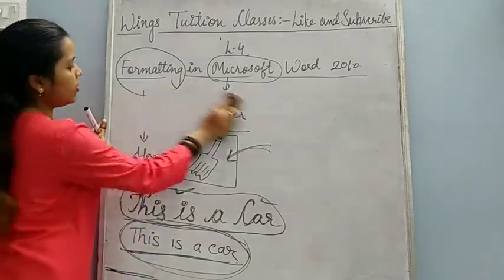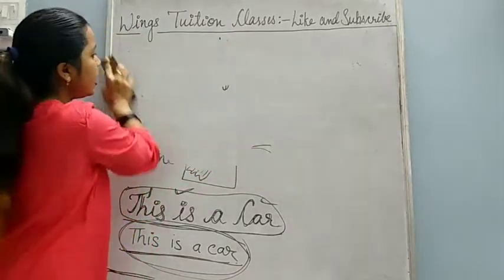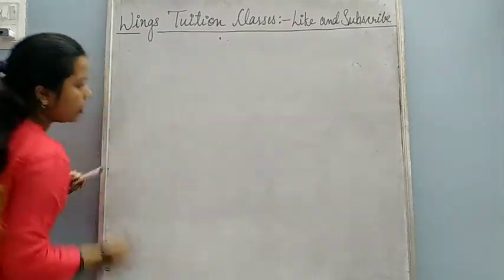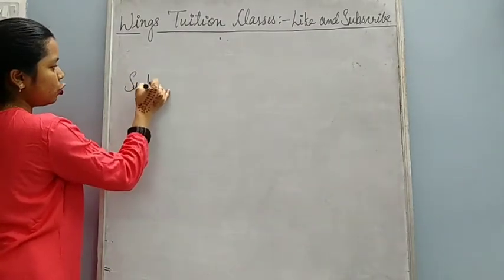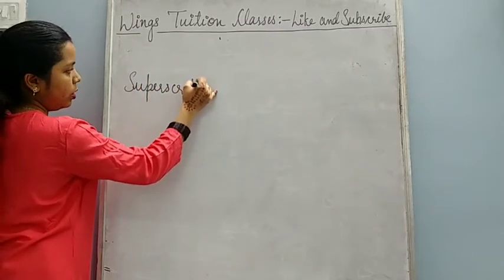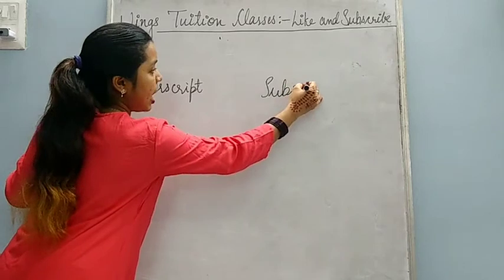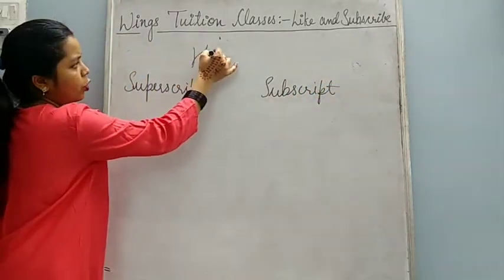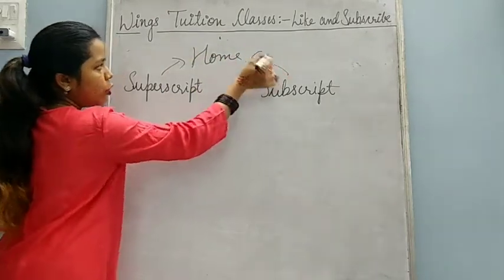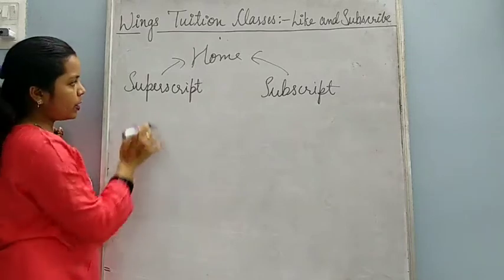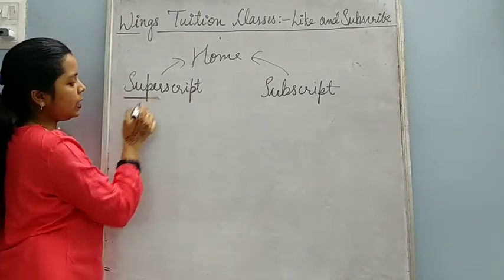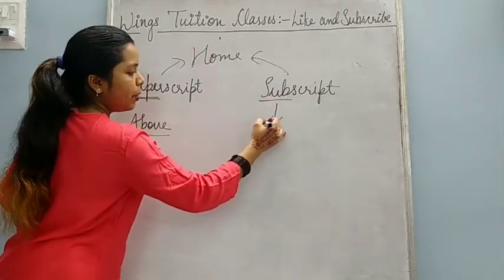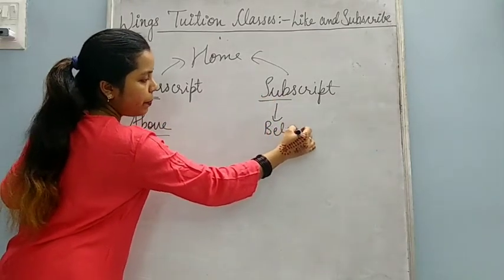Now the next topic given in your book is Superscript and Subscript. These two buttons are present in MS Word, and both buttons are present on the Home tab. Now what is this Superscript? Super means above, and Sub means below.